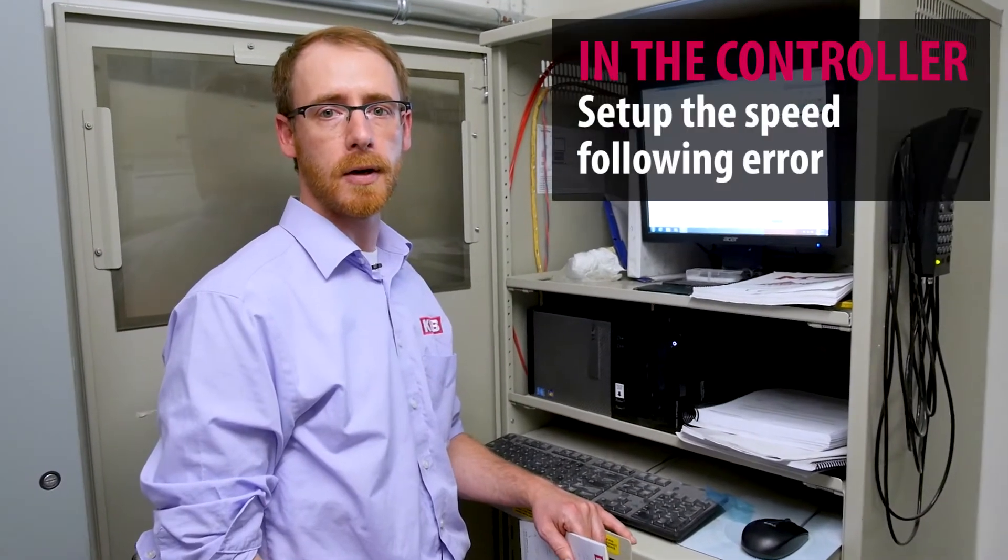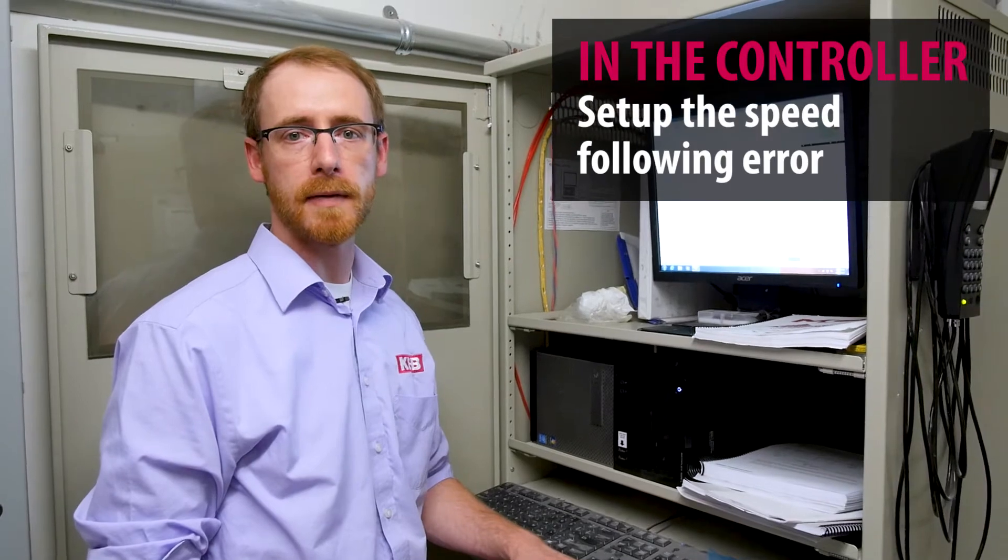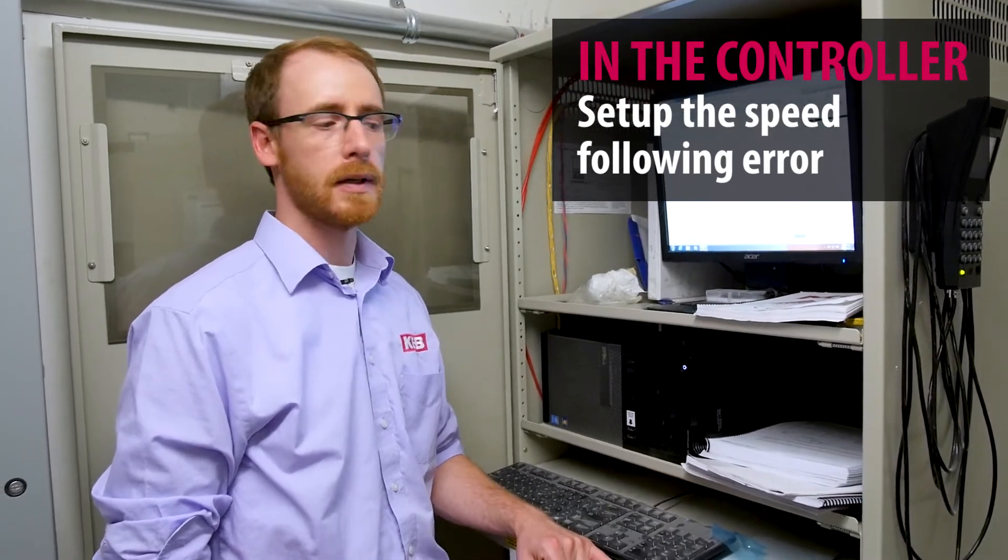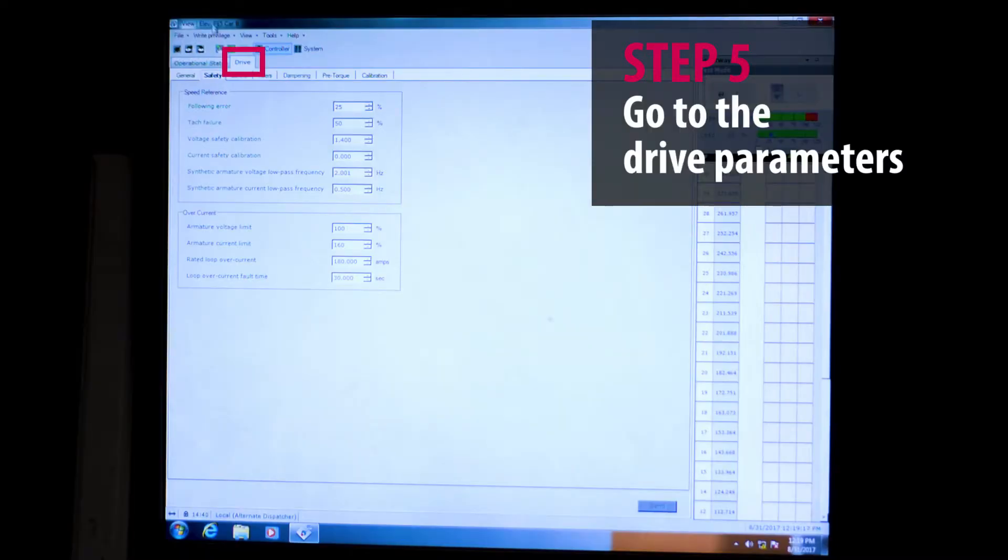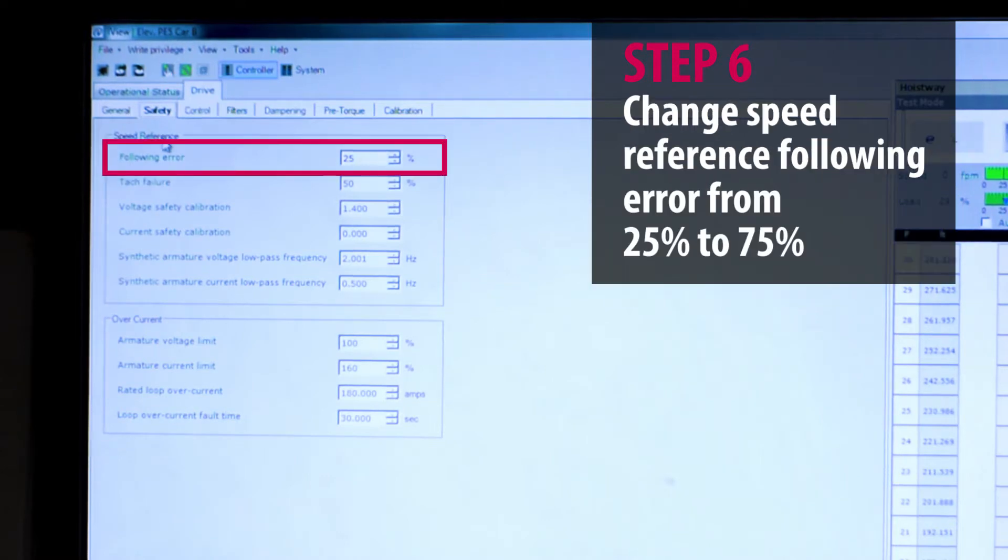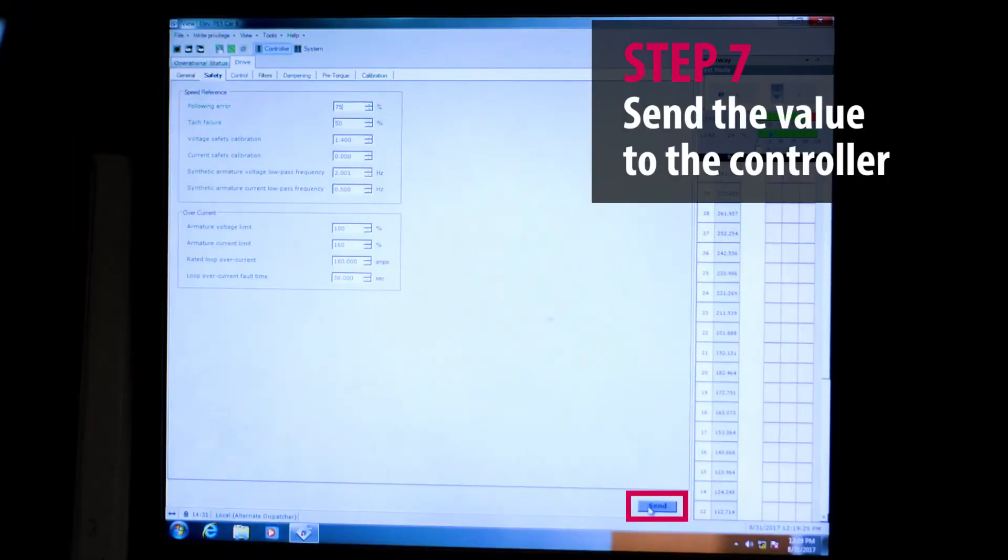Before doing the inertial learn on the drive, we need to set up the speed following error in the controller. To do this, we'll go to the drive parameters and under speed reference we'll change the following error from 25 to 75 and then send that value to the controller.